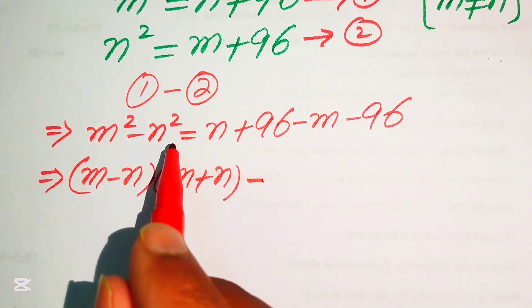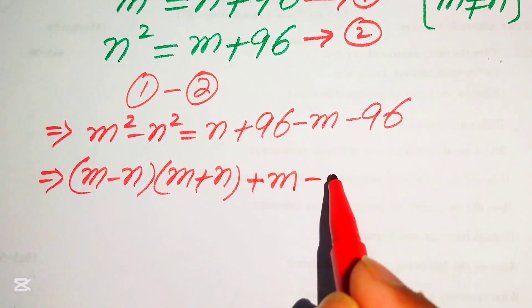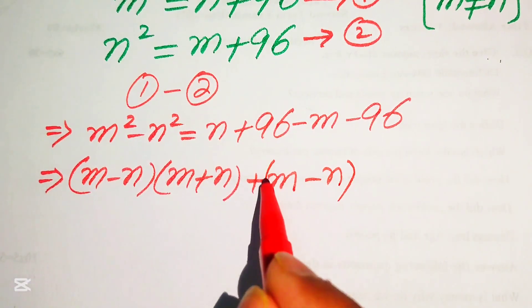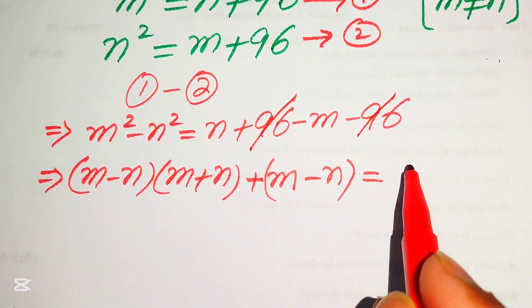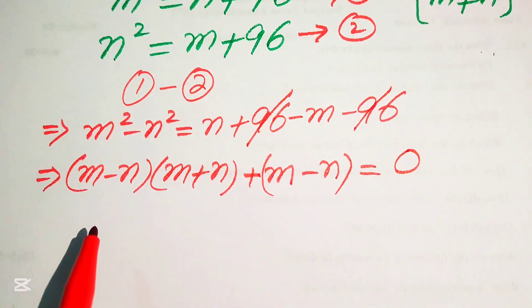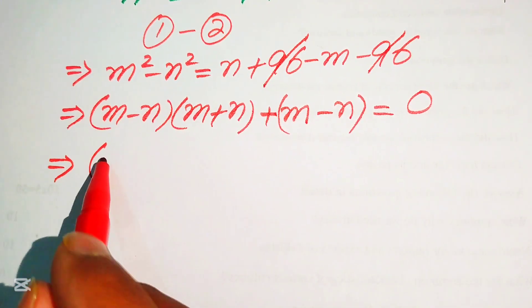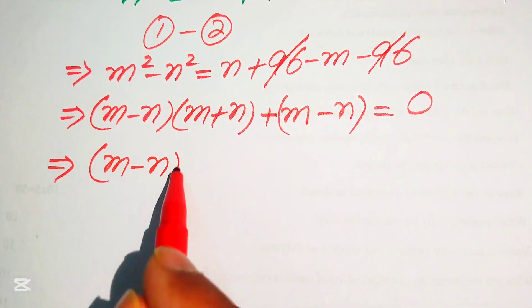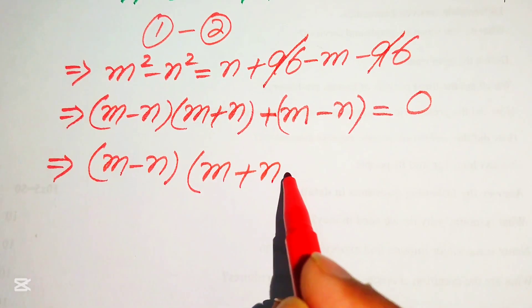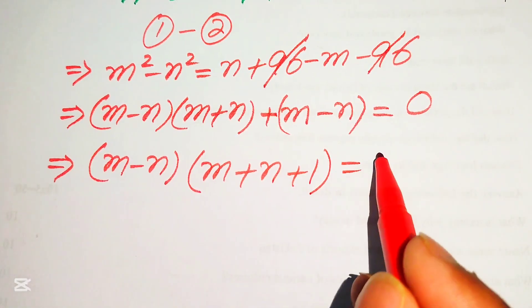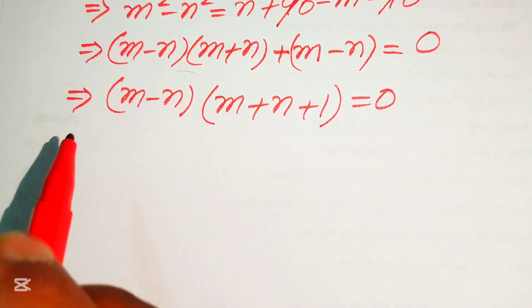We move m and n to the left-hand side: positive m becomes positive and positive n becomes negative. The +96 and -96 cancel out to zero. We factor out (m - n), giving us (m - n)(m + n + 1) = 0.